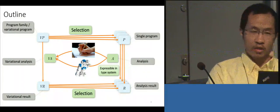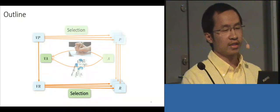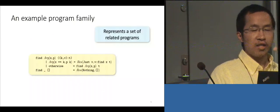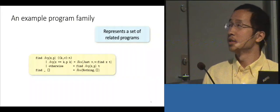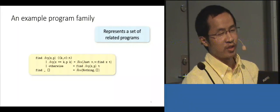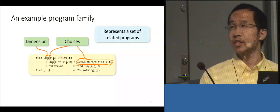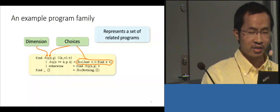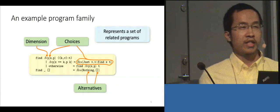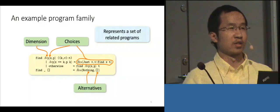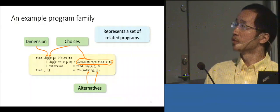This is also the outline of my talk. We first look at variational analysis and its benefits. Here is a variational program for a running example. You will see some special notations — this is called a choice. A choice consists of a dimension, which is its name, and also the alternatives of the choice. You can think of choices as methods, but they are more disciplined.